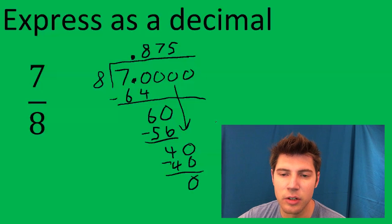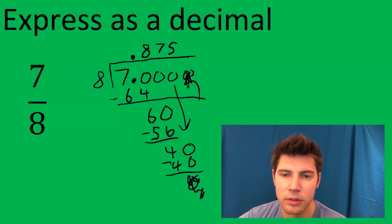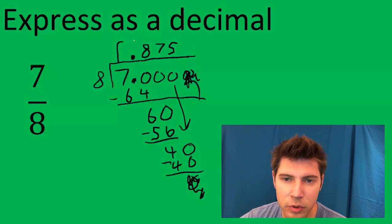When we subtract we have 0, so we're actually done at this point. And this is our answer: 0.875.